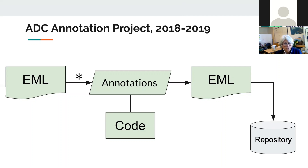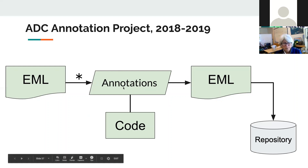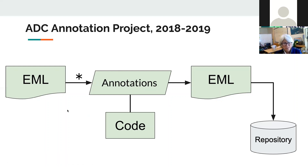The third workflow involves annotating existing EML. The Arctic Data Center was funded by NSF with a supplement to annotate datasets in its holdings to improve searches. They have added measurement annotations to hundreds of carbon cycling datasets having thousands of attributes. Their approach was to augment that EML directly because this was the most efficient way for a group of annotation experts — rather than curators — to work. That workflow with existing EML involves creating external annotations, then adding them back into the EML.